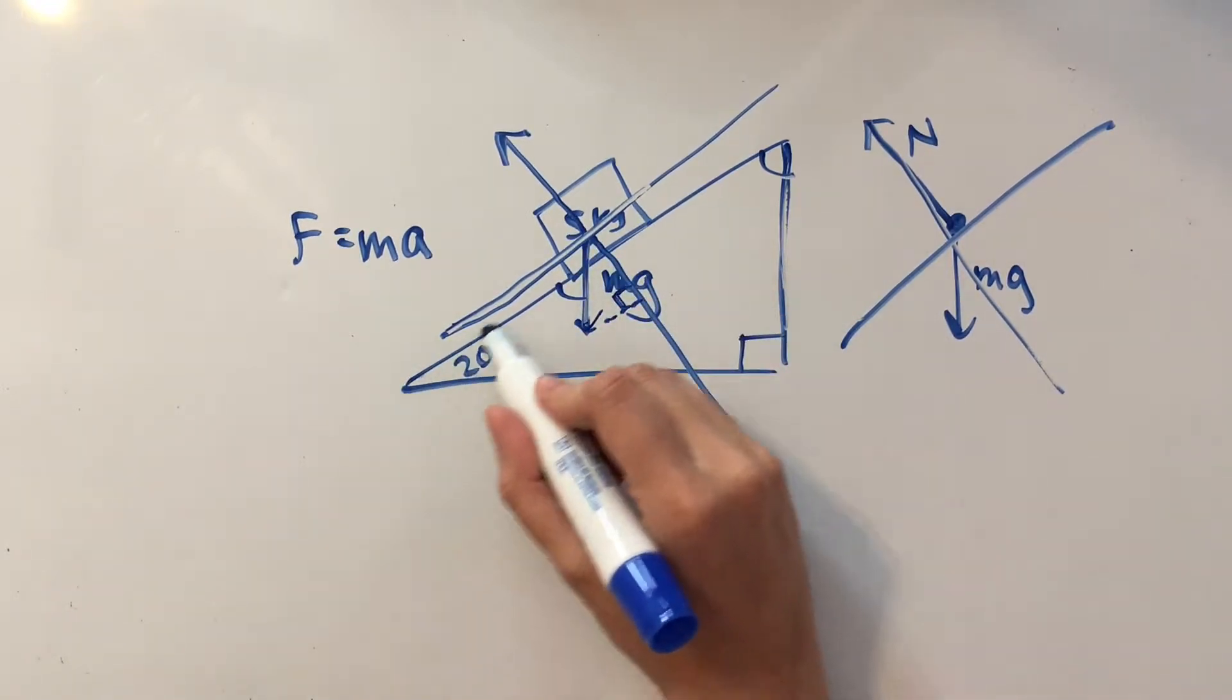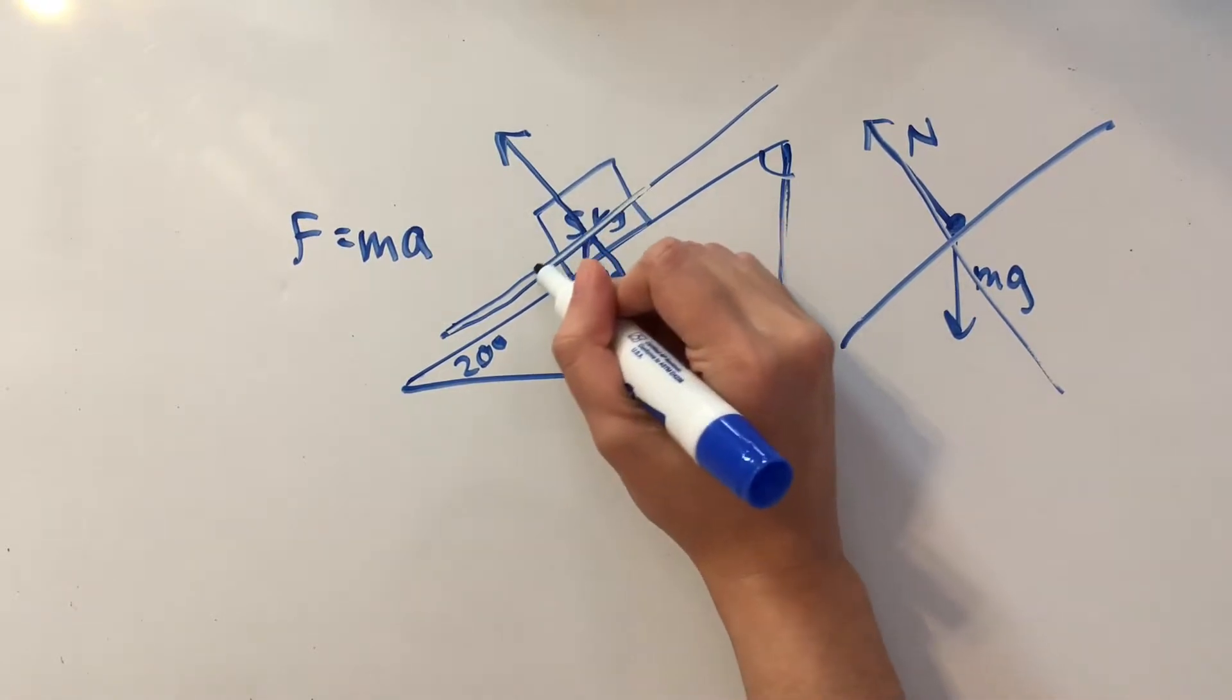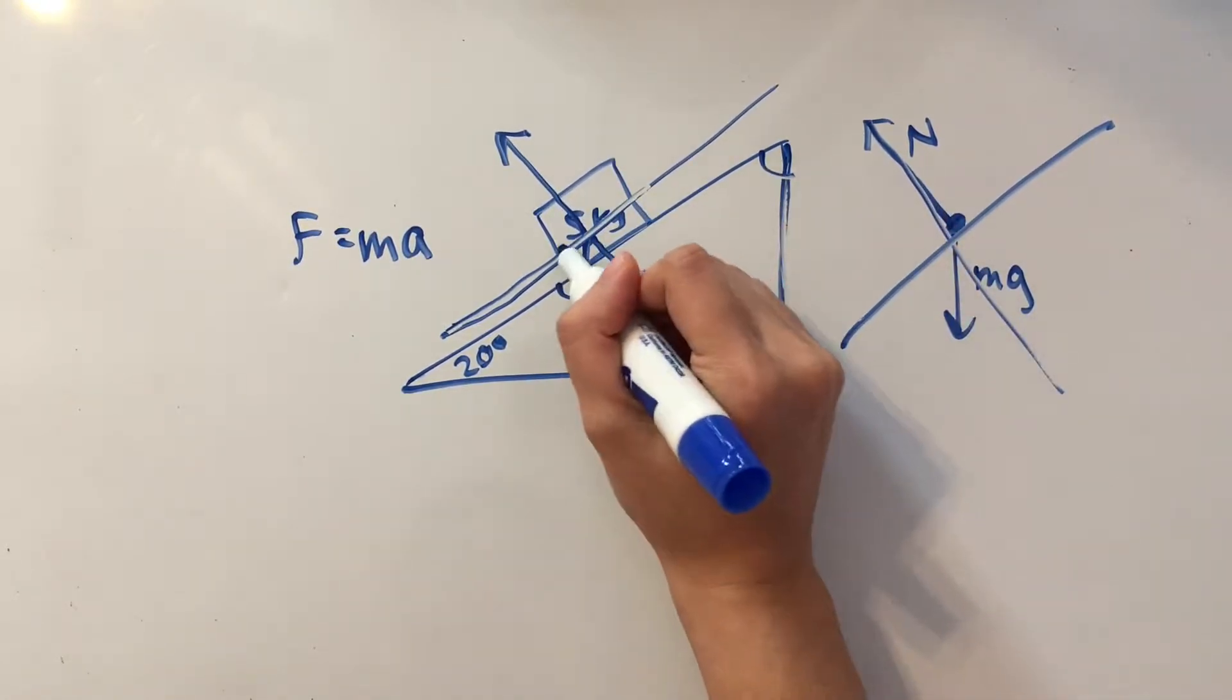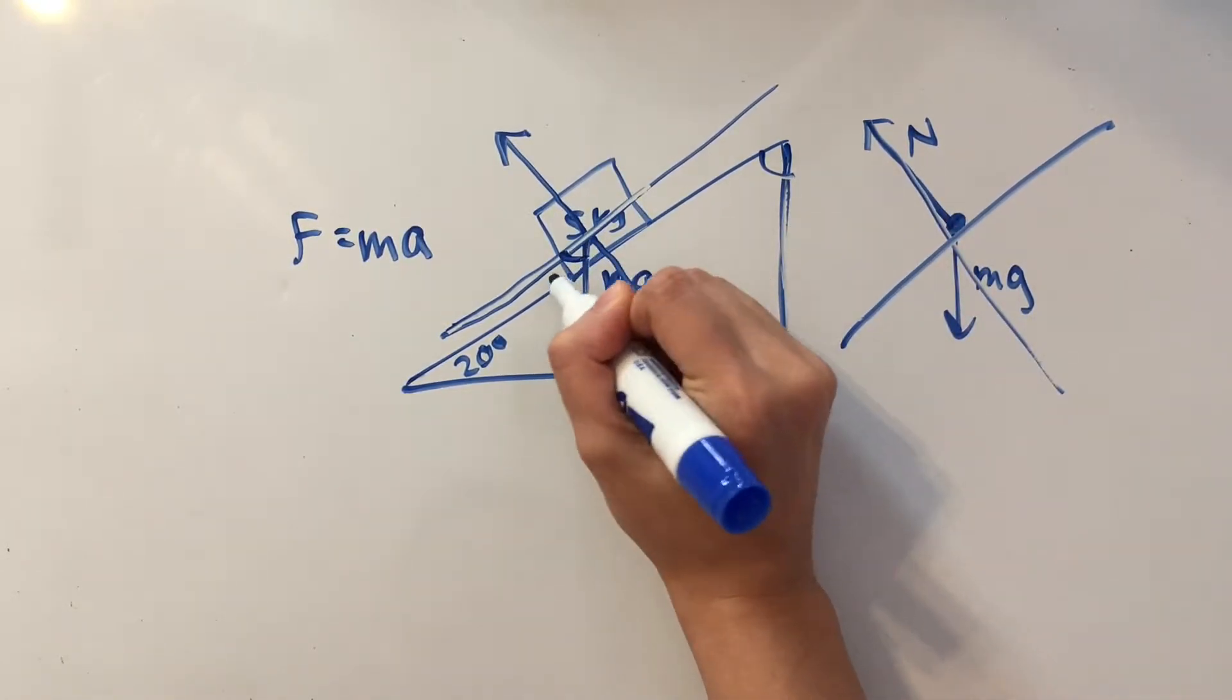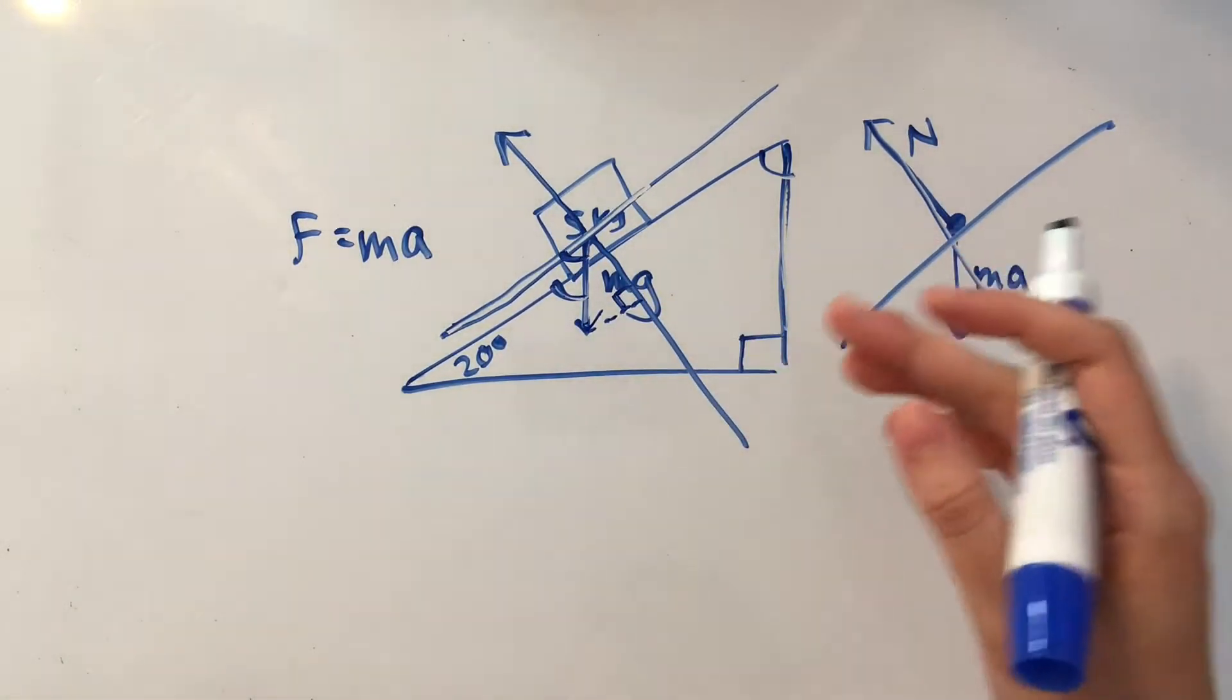So since these two lines are parallel, these two angles, this one and this one, are also going to be the same size.